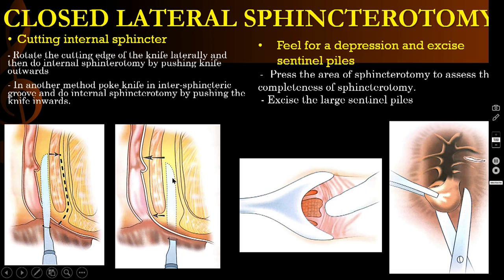I always do the sub-mucosal plane method only. In addition to this, I will put my finger inside the anal canal to safeguard the mucosa, then push the knife towards my finger in the anus — like this. Then only the internal sphincter will be cut and the mucosa won't get damaged.